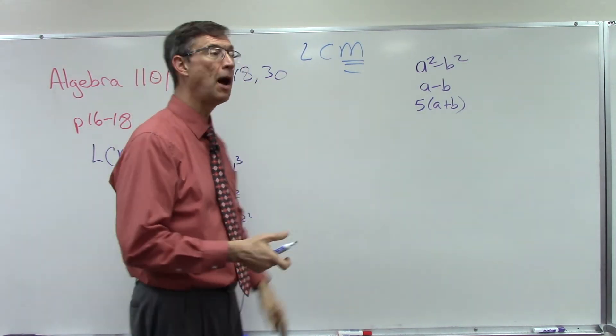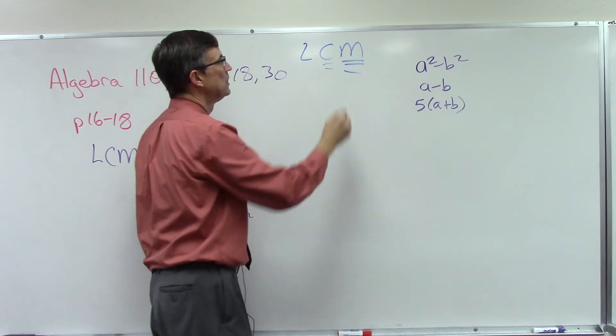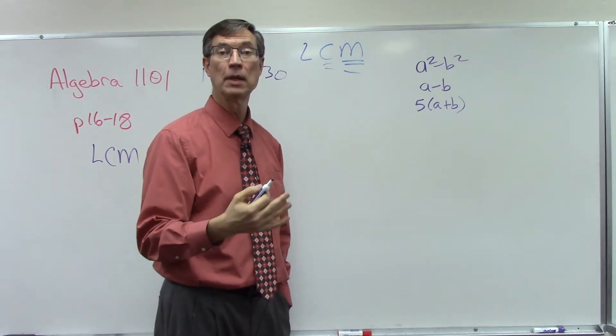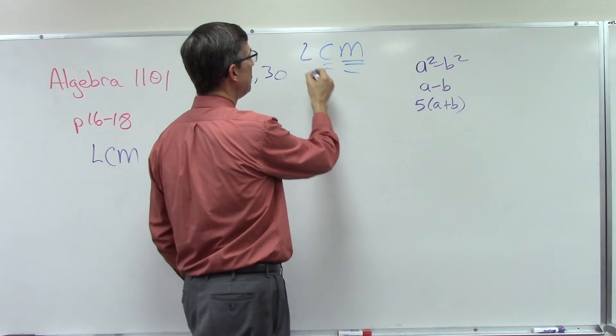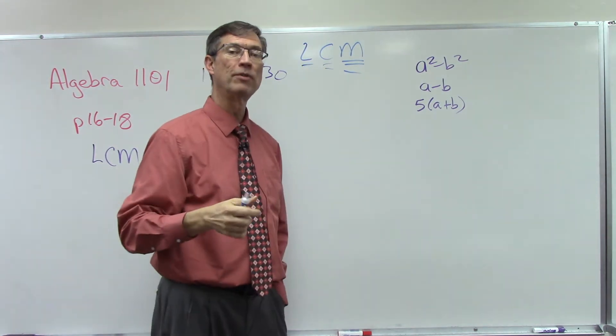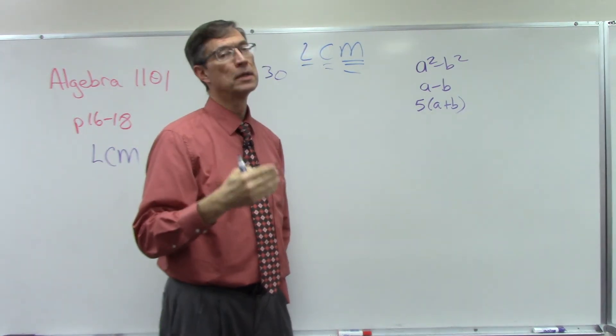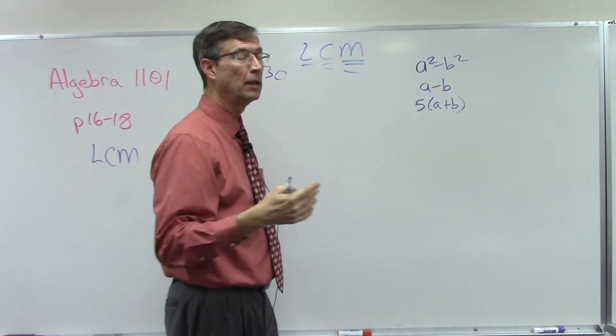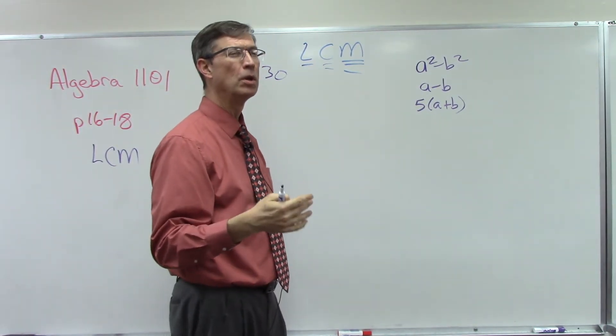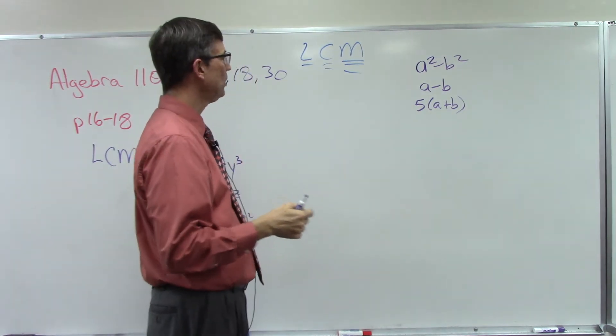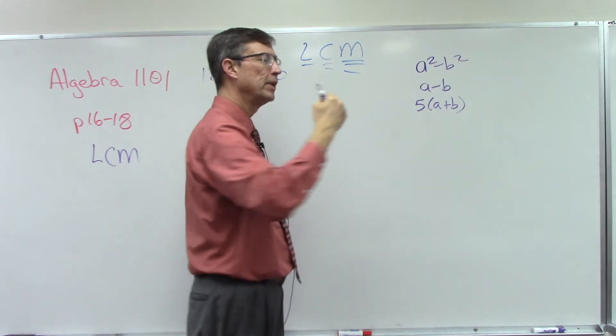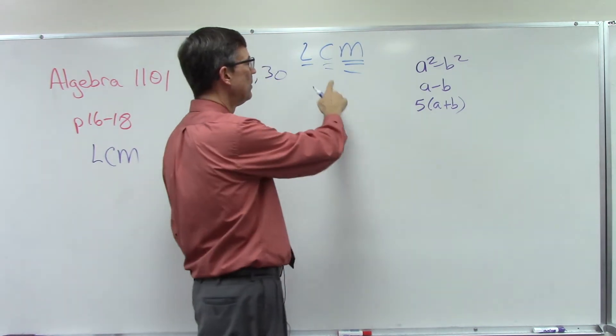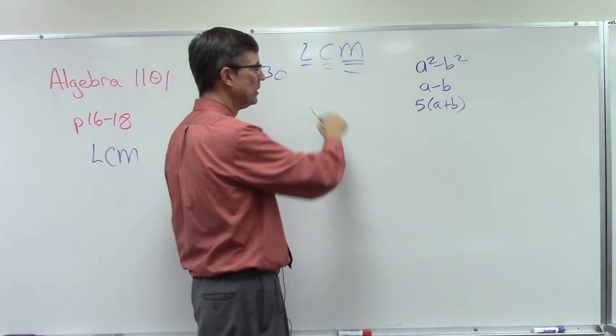So common is the next keyword - a common multiple. There could be a lot of them. Then we come back to the word least. We want to find the smallest common multiple. Start with the word multiple to think about big numbers, then what do they have in common, find the least.